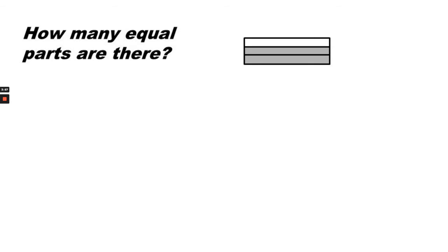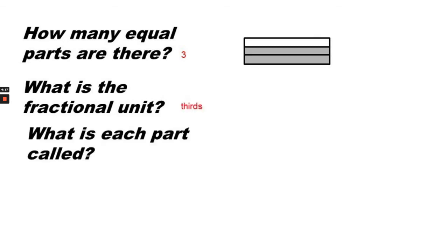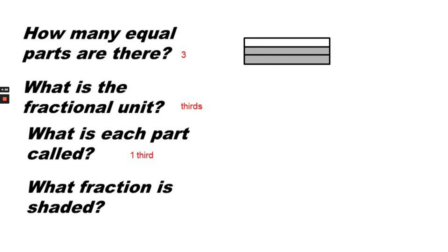How many equal parts are here? Three. There are three equal parts. What is the fractional unit? The fractional unit is thirds. What is each part called? Each part is called one third. What fraction is shaded? Two thirds are shaded.